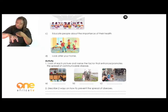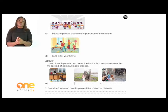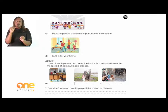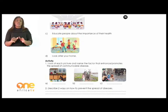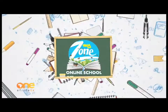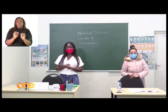Now we are going to do a short activity. Let's read the questions together. Number one: look at each picture and name the factor that enhances or promotes the spread of communicable disease — there are three pictures to identify. Number two: describe ways on how to prevent the spread of diseases. This is the end of our lesson. The memorandum is at the back of the booklet.